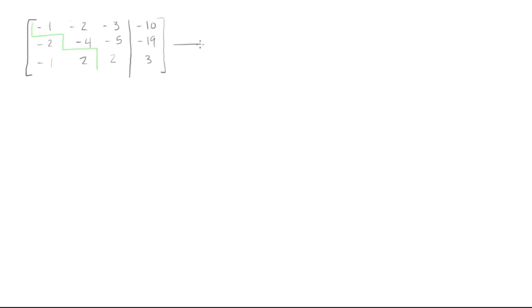So let's do our first row elementary row operation and we'll say we're going to multiply the first row by negative 1. So negative 1 times R1 will equal this new matrix. So we're only going to look at the first row, so it'll be 1, 2, 3, and positive 10. And now the bottom rows, the bottom two rows will stay exactly the same. Negative 2, negative 4, that was 5, negative 19, that was negative 5, negative 1, 2, 2, and 3.